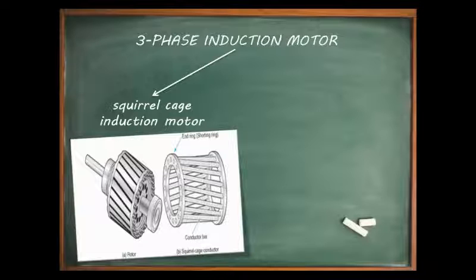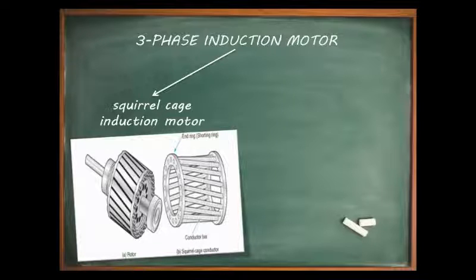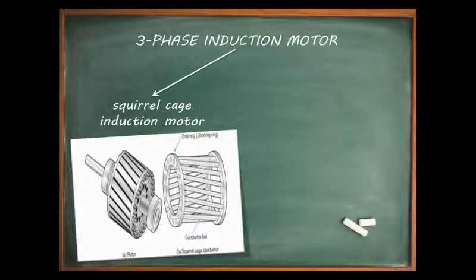At both ends of the rotor, the rotor conductors are short-circuited by continuous end rings of similar material as that of the conductors. The rotor conductors and end rings form a complete circuit that resembles a squirrel cage, hence the name. Since the rotor winding is permanently short-circuited in cage construction, there is no possibility of adding any external resistance in the rotor circuit.